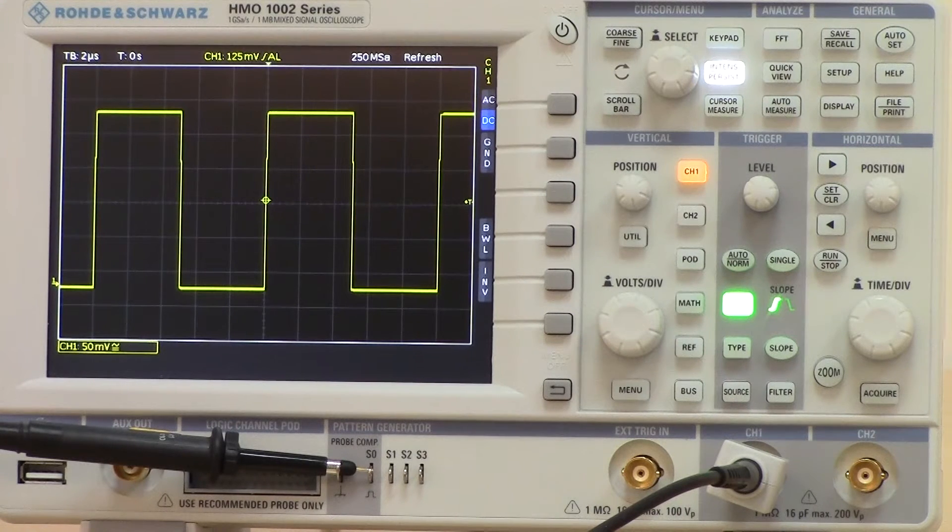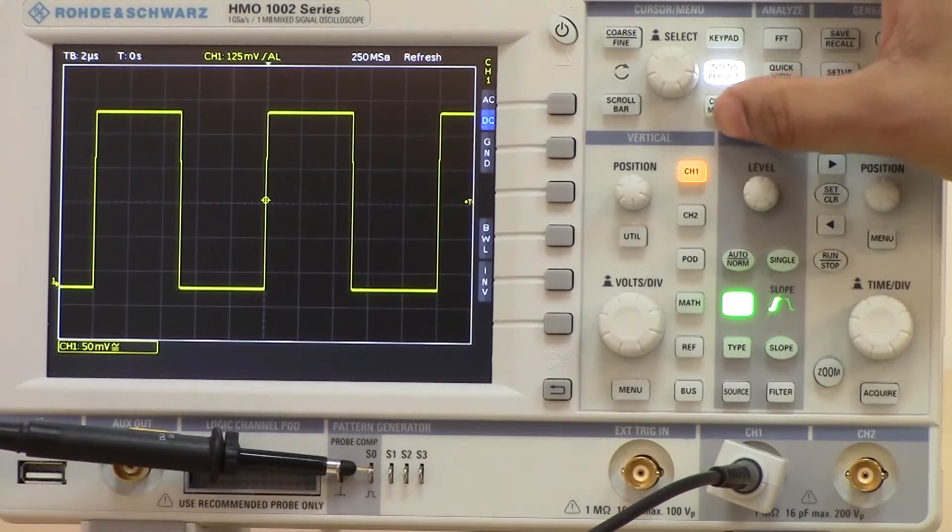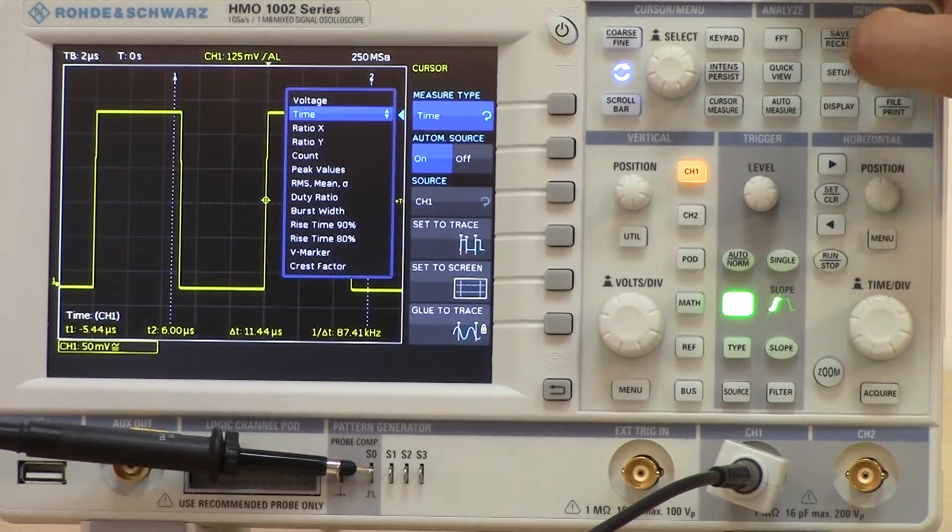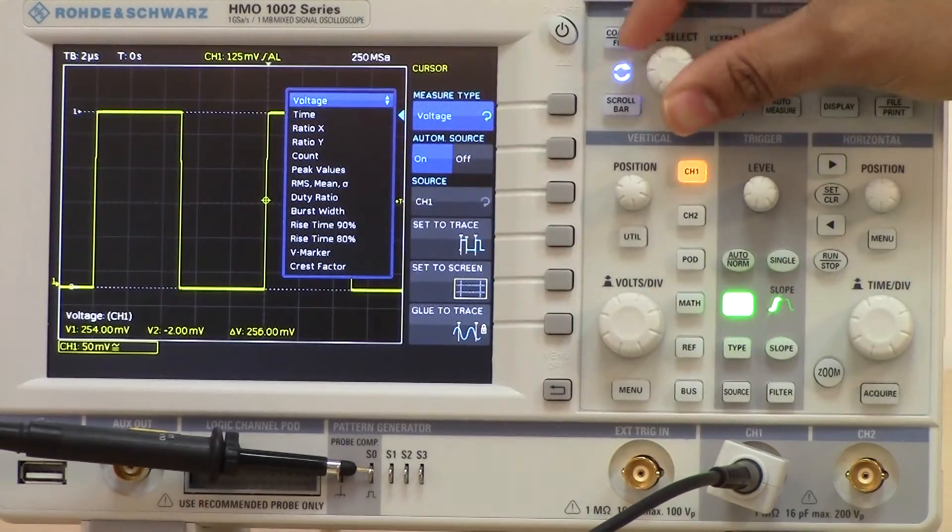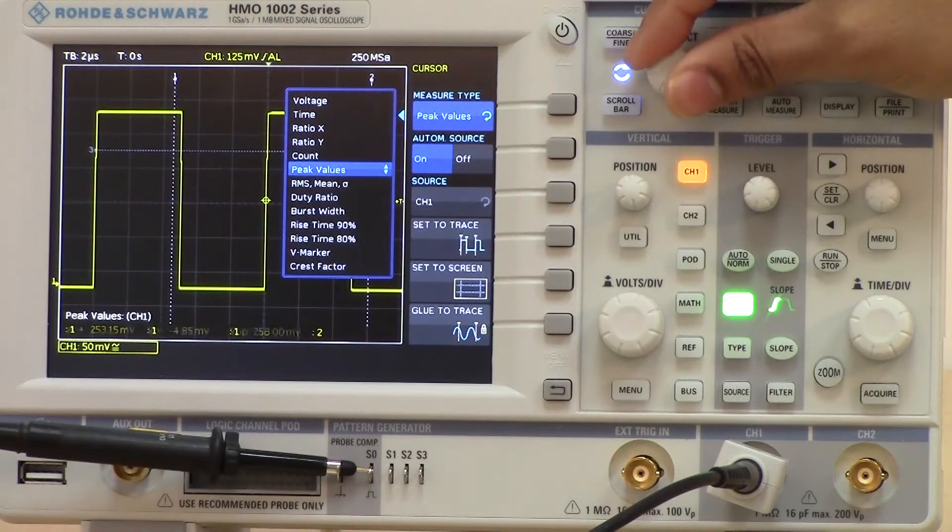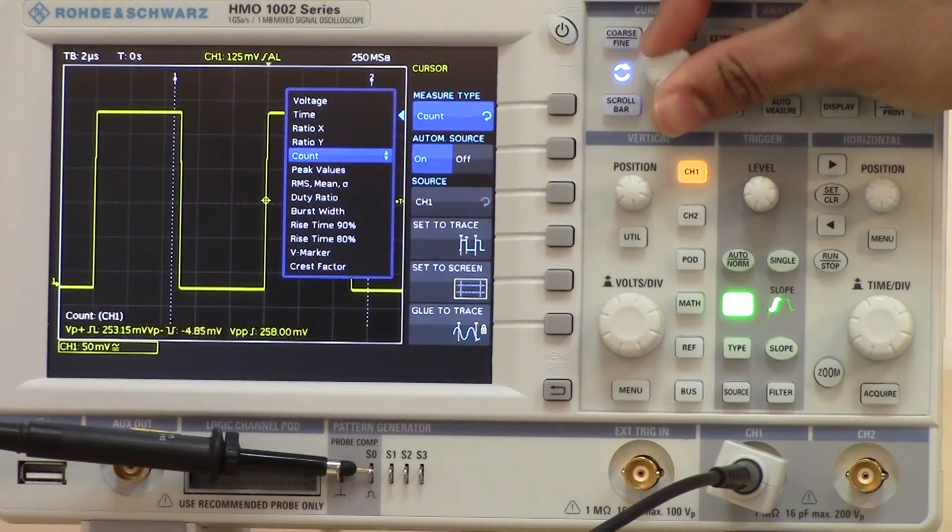On the HMO, cursors can be activated by using the cursor measure button. As you can see here from this list, users can then choose which cursors to actually activate.